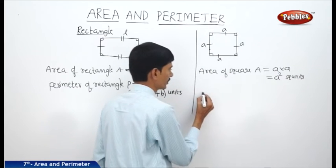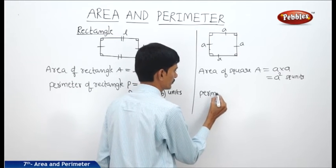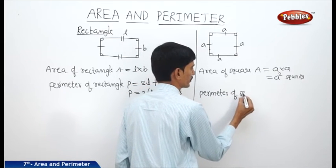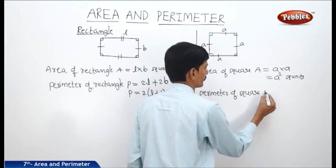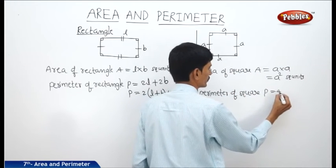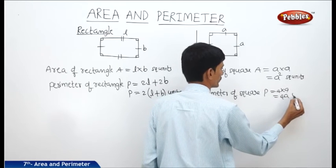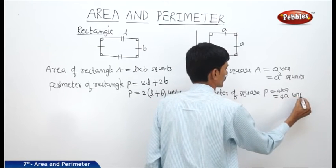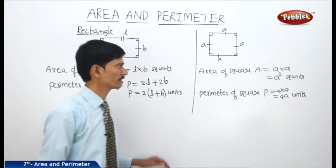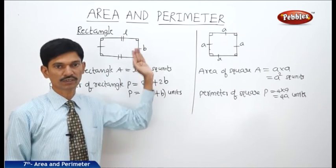And the perimeter of the square: P equals four times A, since there are four sides, so that equals 4A units. These are the formulas to find the area and perimeter of the rectangle as well as the square.